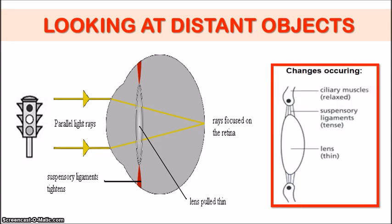So let's go over this in a little more detail. We have the ciliary muscles — in this case, the muscles are going to be relaxed. And these ciliary muscles control the suspensory ligaments, making them more tense or tightened, which pulls on the lens and makes the lens thinner than it would have been when looking at a nearby object. The key points to remember: thin lens when looking at distant objects, thick lens when looking at nearby objects.